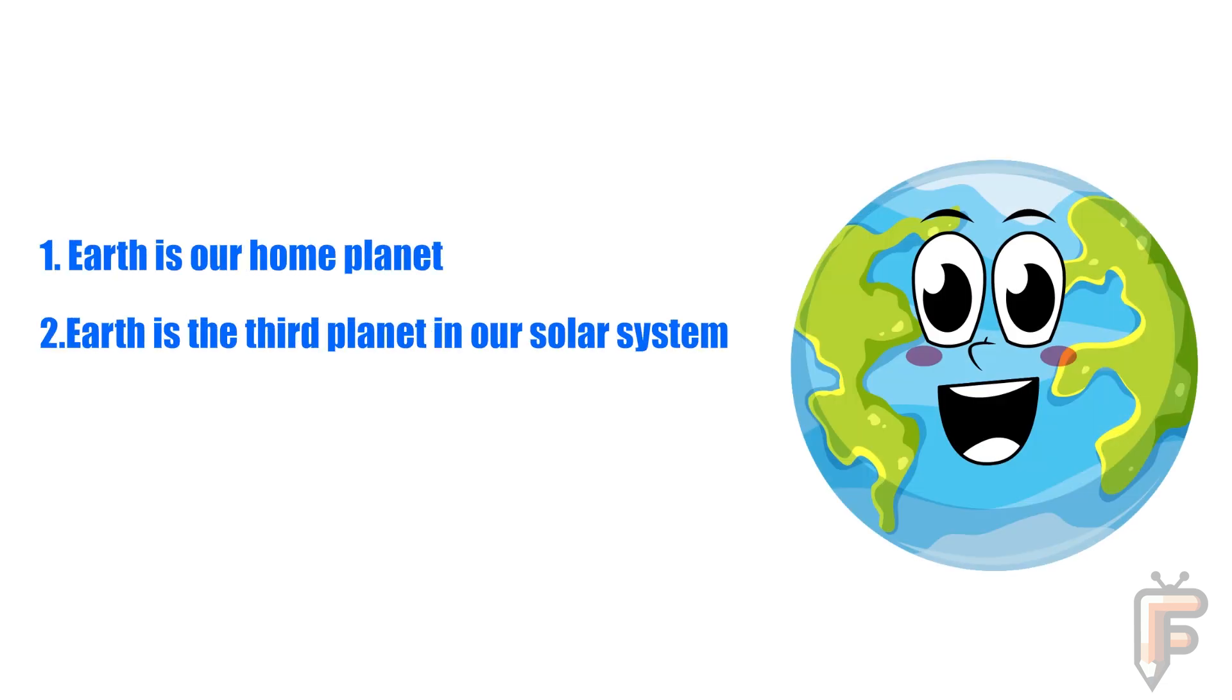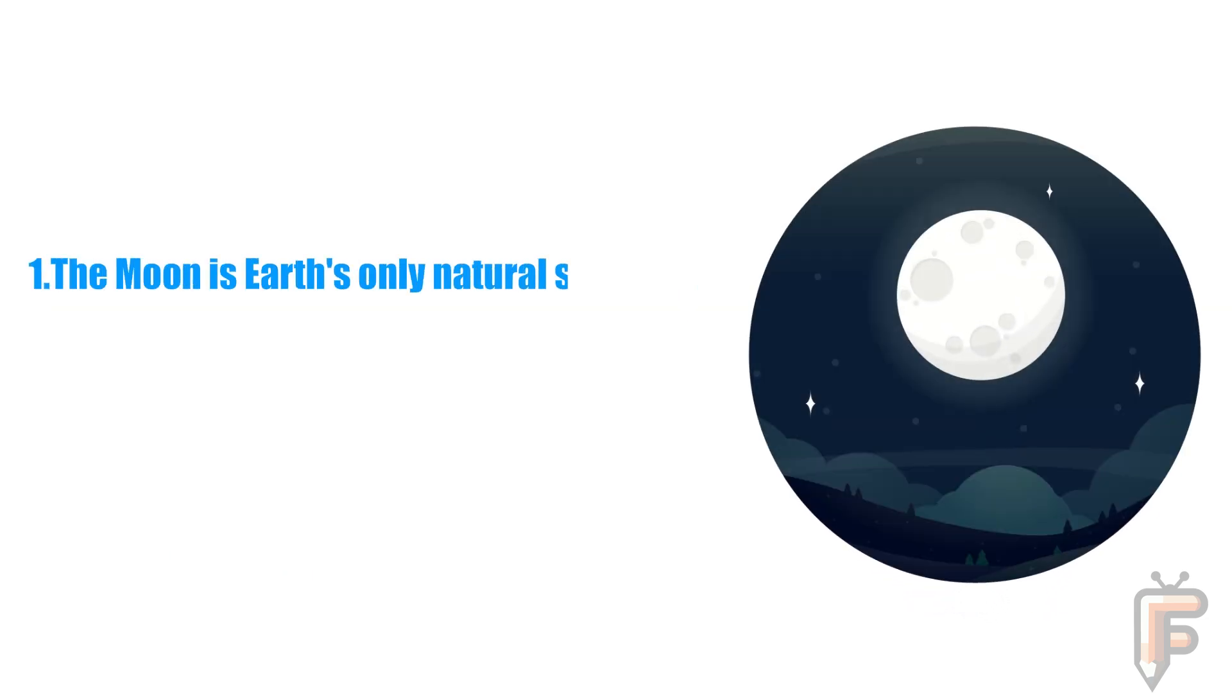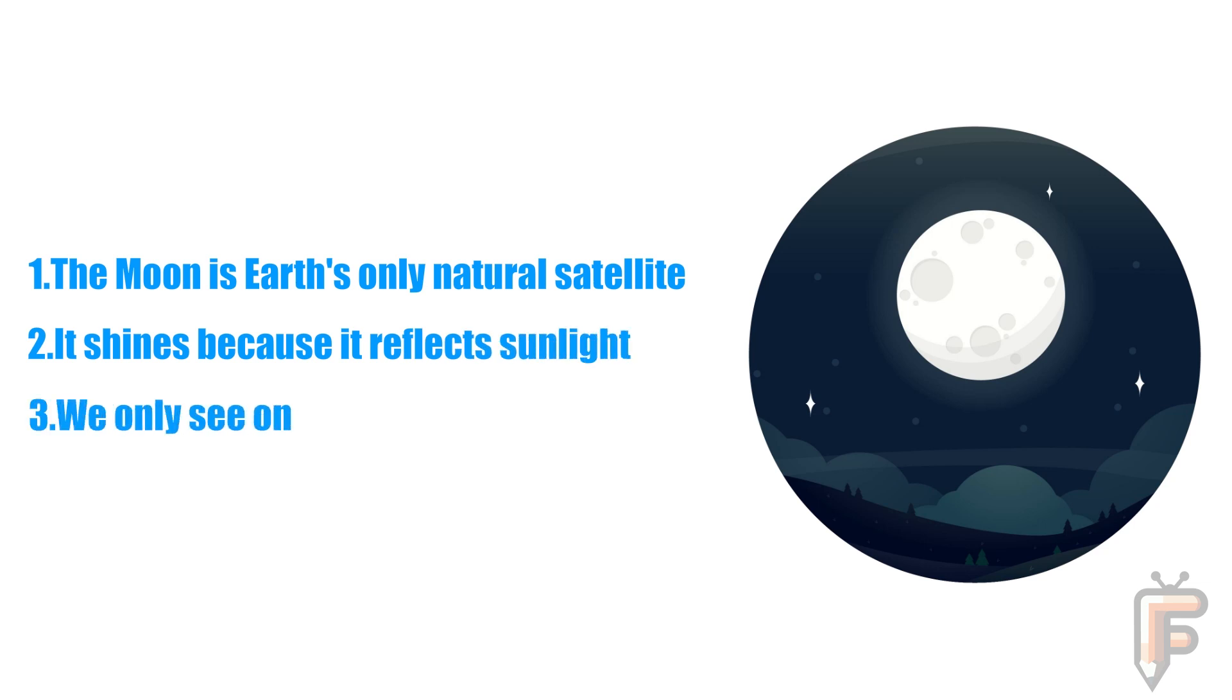This is the Moon. The Moon is Earth's only natural satellite. It shines because it reflects sunlight. We only see one side of the Moon from Earth.